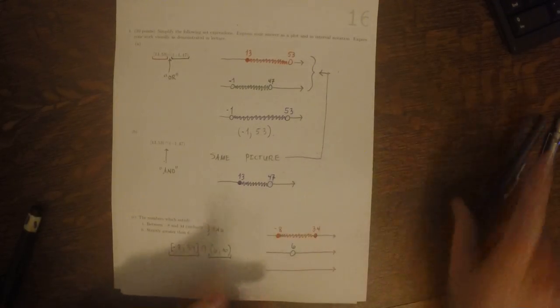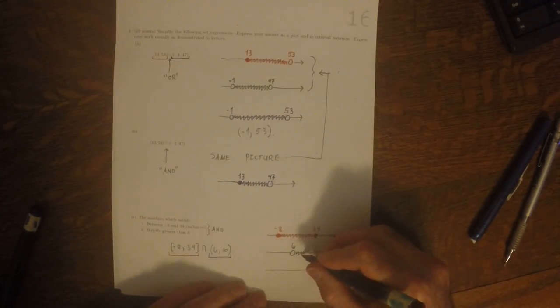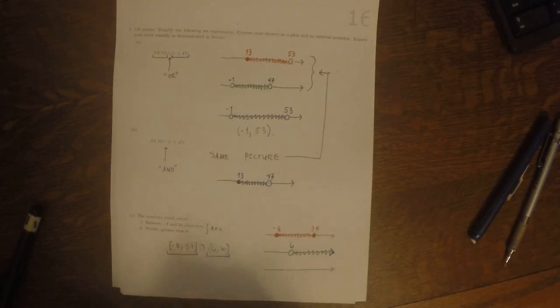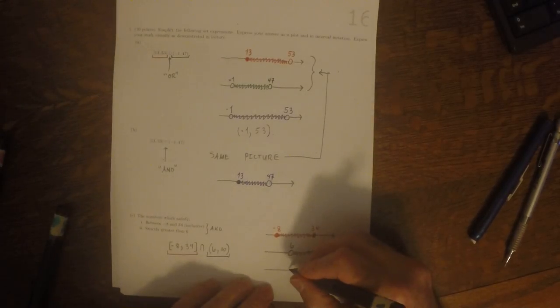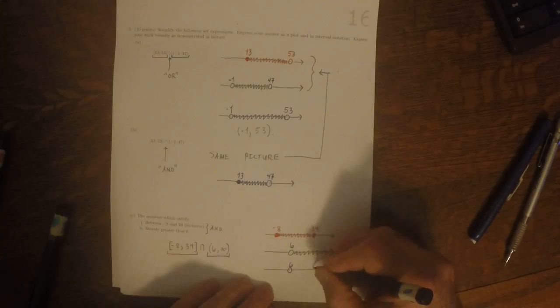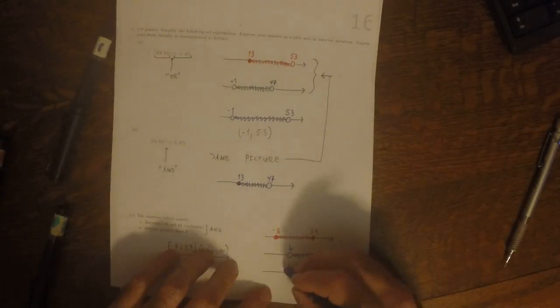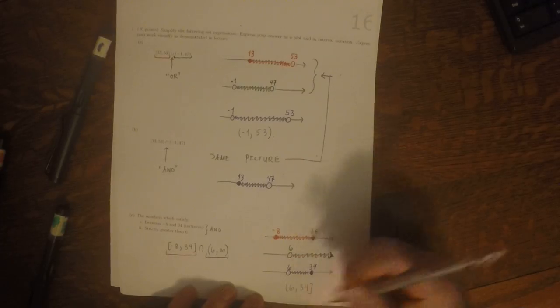And then 6 to infinity—that's the rest of the line. We want intersection, which will be 6 to 34. And written in interval notation, that's 6 to 34.